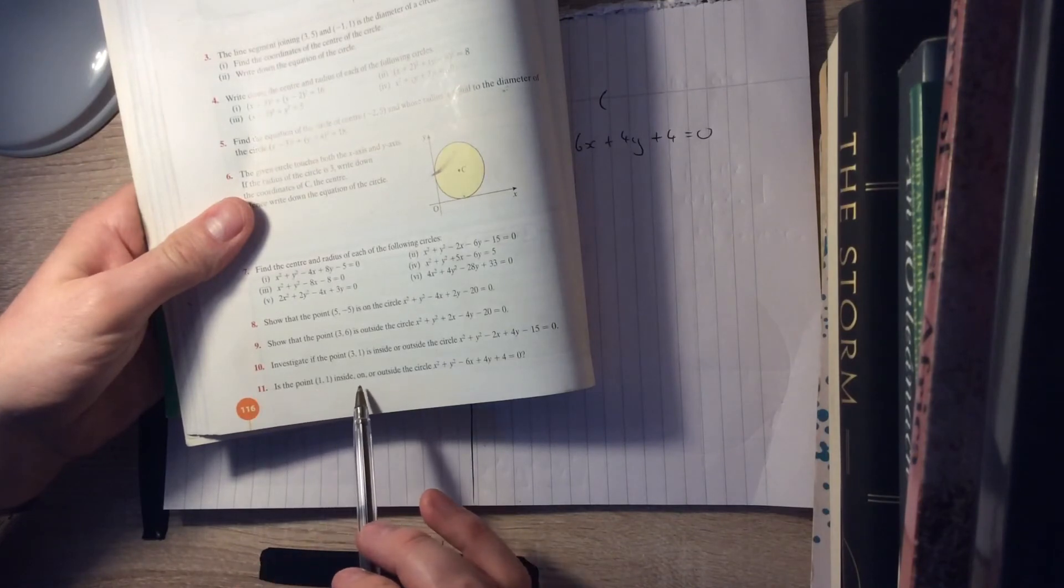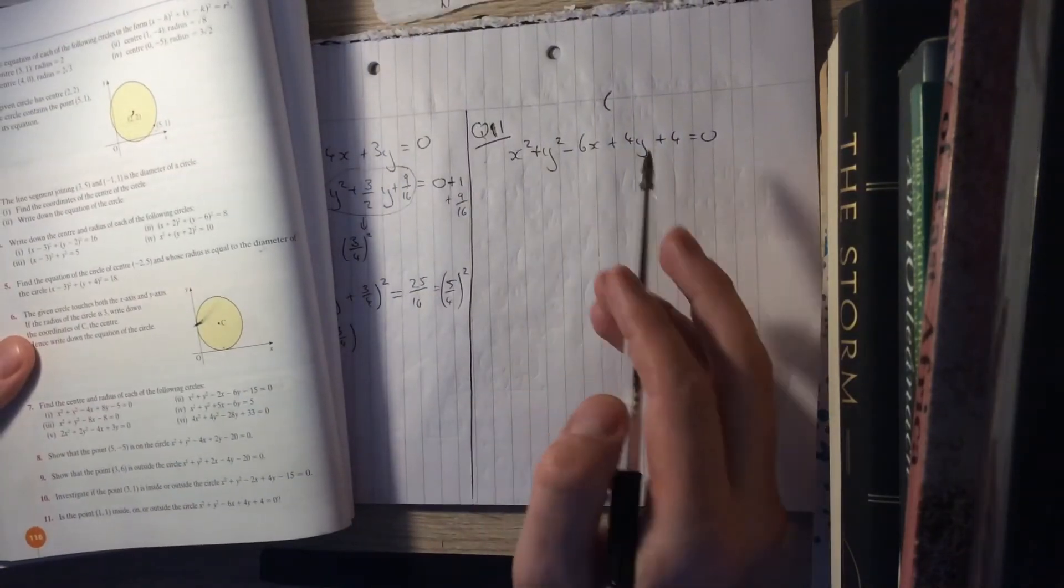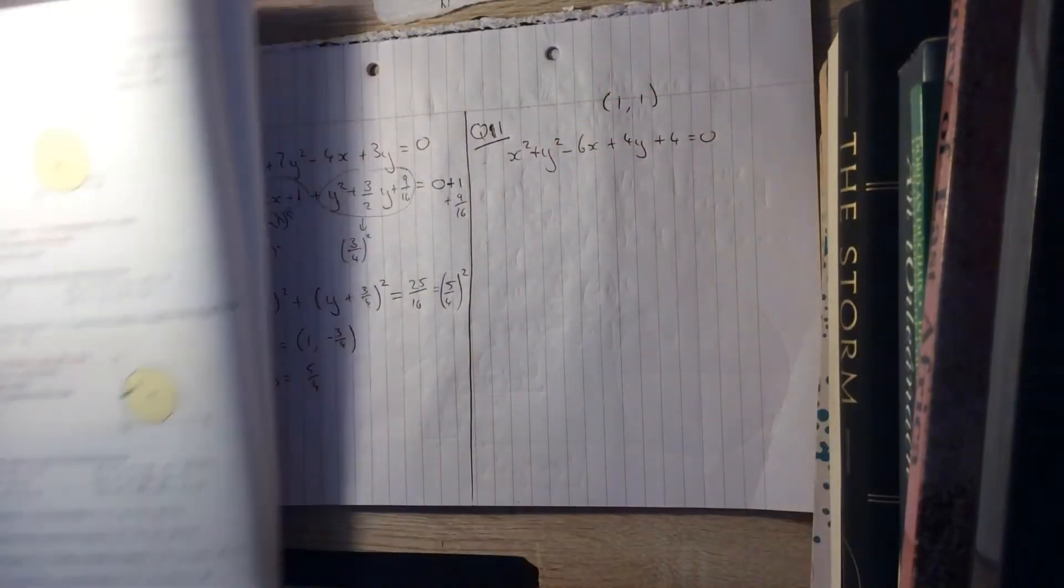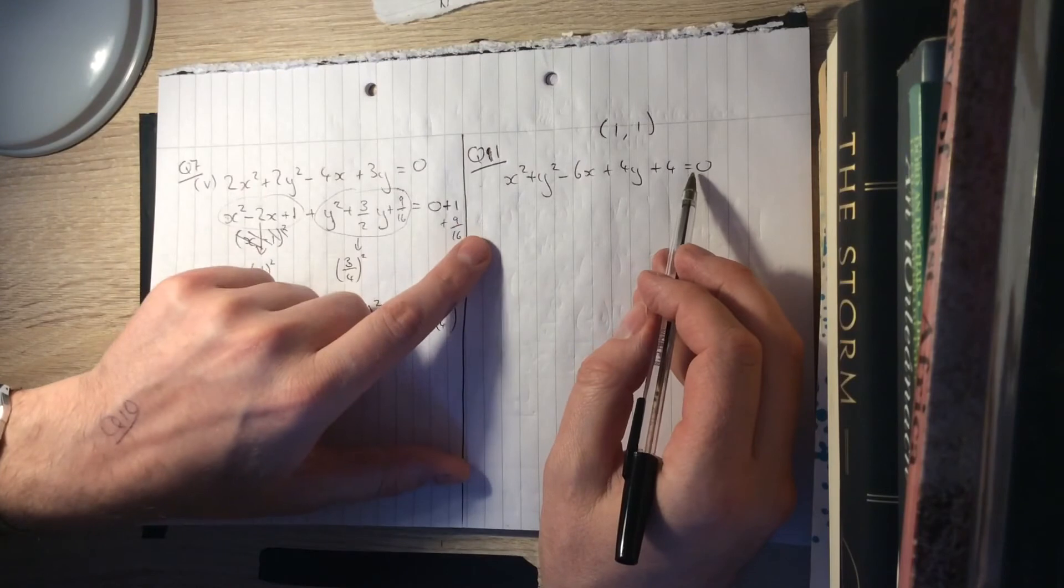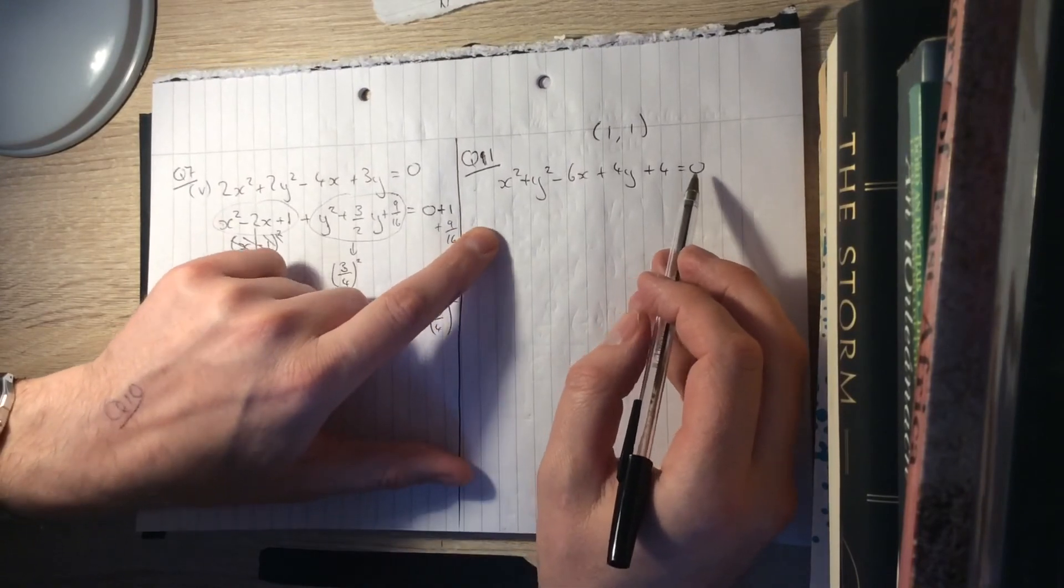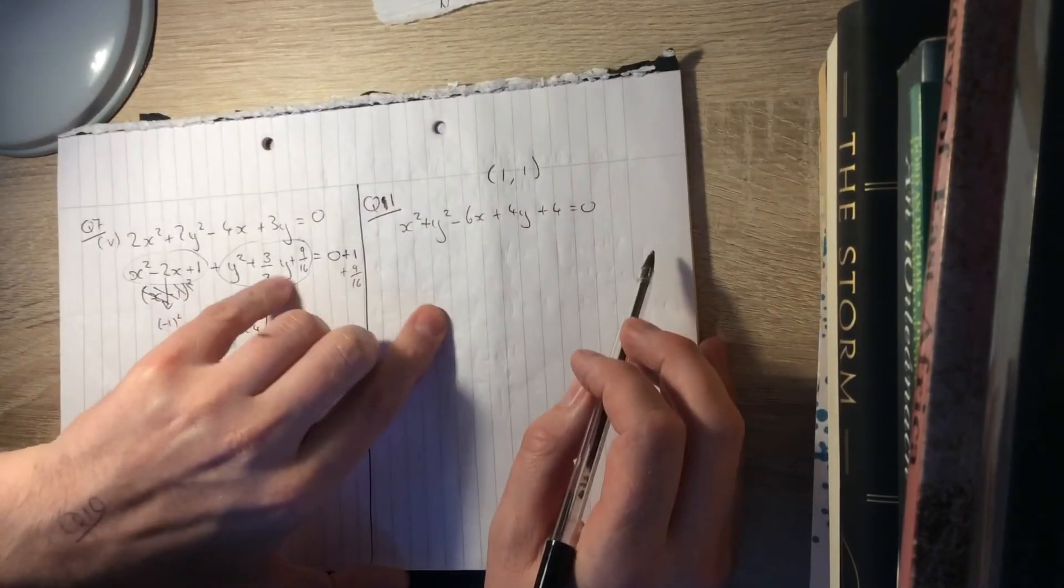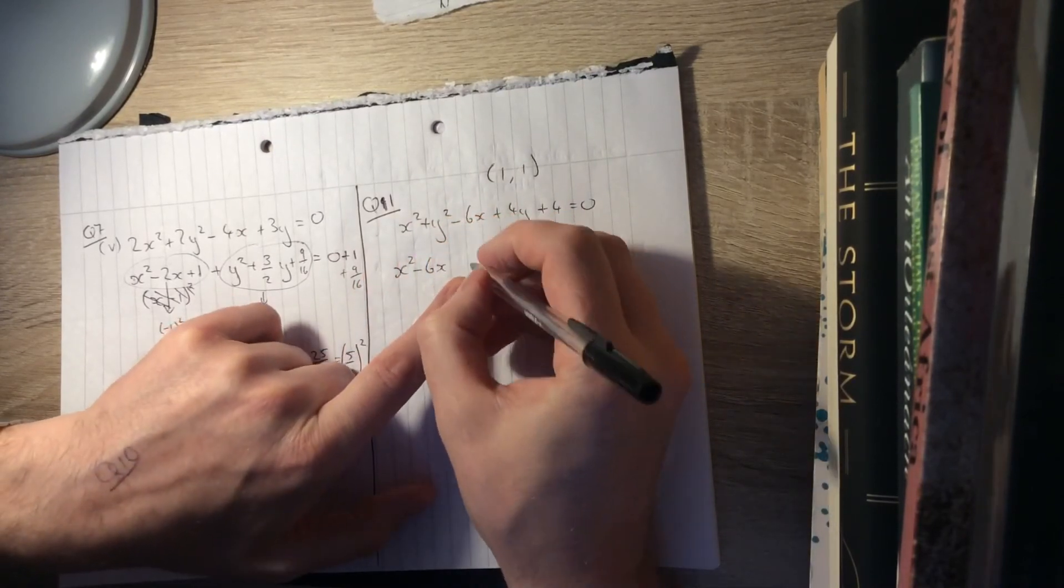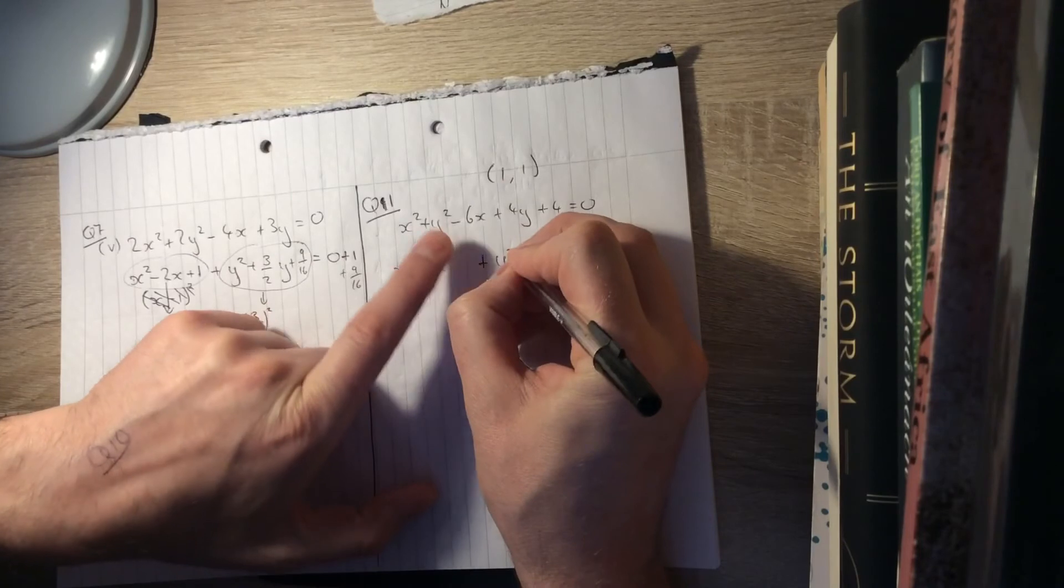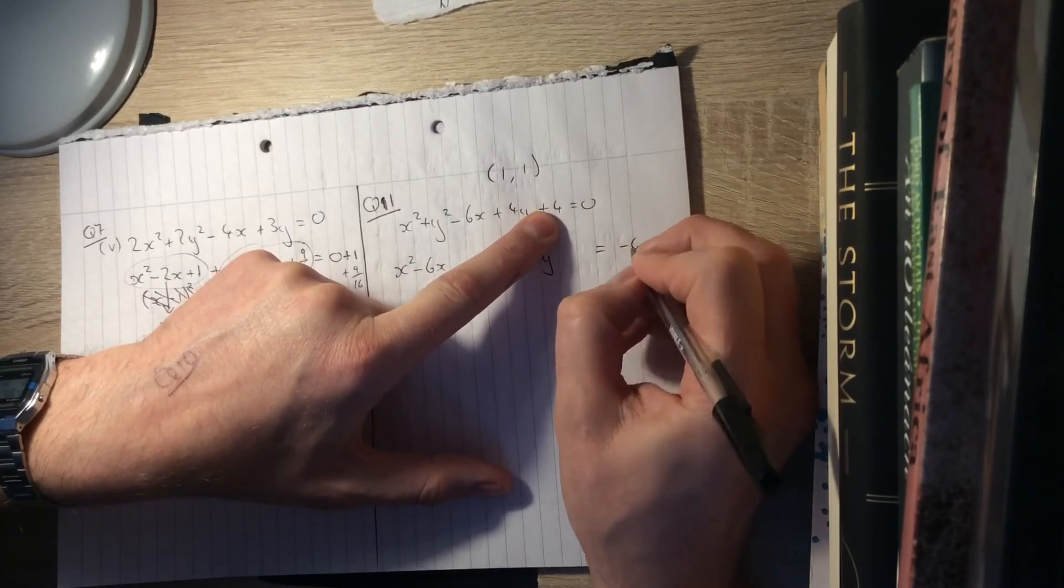And lastly, we'll have a look at question 11. It says, is the point 1, 1 inside, on, or outside this circle? So how do we do that? Well, there's the circle, the point is 1, 1. And what we need to do is draw out this circle, decide where its center and radius is. We don't need to draw it every time, but we'll maybe draw it for this one. So let's start off, let's do our little rearranging trick. So x squared stays where it is, minus 6x, leave a gap, plus y squared, plus 4y, leave a gap, equals, bring that over, you get a minus 4 on the right-hand side.